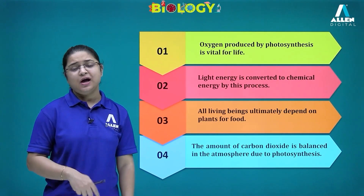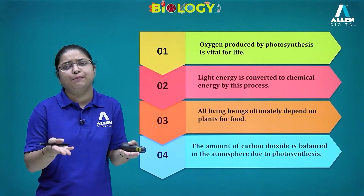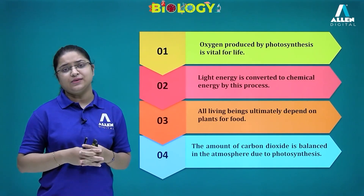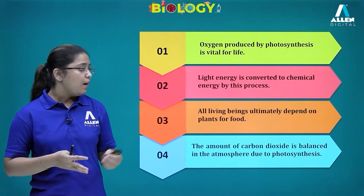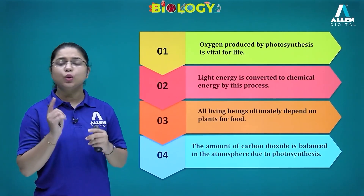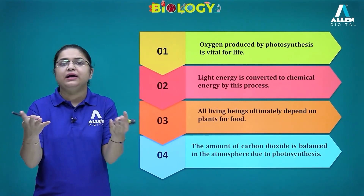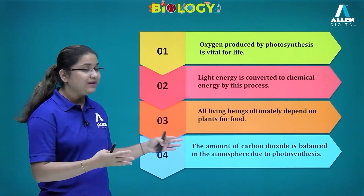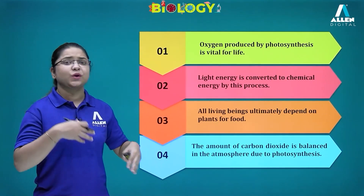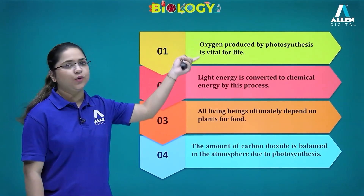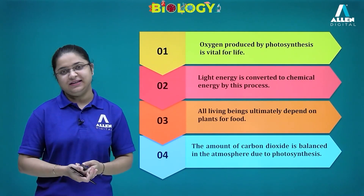The amount of carbon dioxide is balanced in the atmosphere due to photosynthesis. Activities like burning fossil fuels produce carbon dioxide, which harms the environment. Planting more trees is beneficial because plants take up the extra carbon dioxide from the atmosphere and release oxygen, recycling the materials present in the environment.